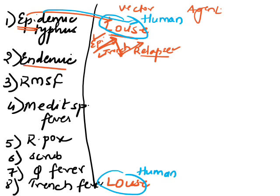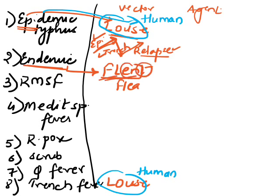Coming to endemic typhus: remember the mnemonic FLINT — the vector is flea. FLINT stands for Flea, Endemic, and Typhi. So the causative agent is Rickettsia typhi.